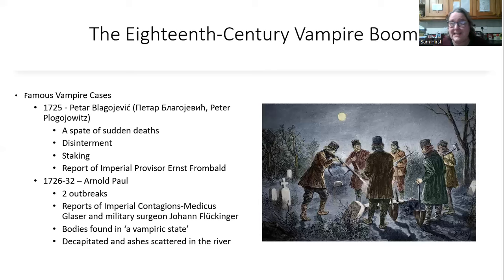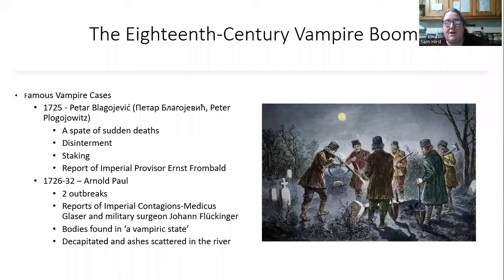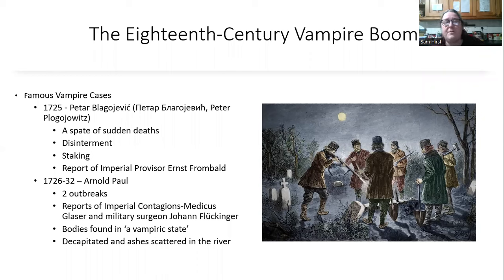It started to be believed that Peter had become a vampire, so he was disinterred. The villagers insisted that the priest attended, along with the Austrian imperial provisor Ernst Frommels. When the body was disinterred, there were signs of vampirism: new growth of skin, hair and nails, blood around the mouth, and no decomposition. The body was then staked, and apparently fresh red blood came out of the heart.